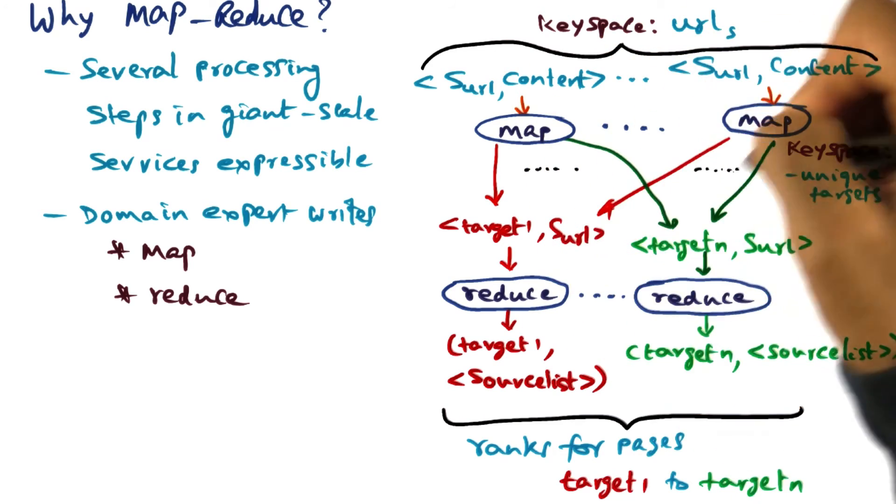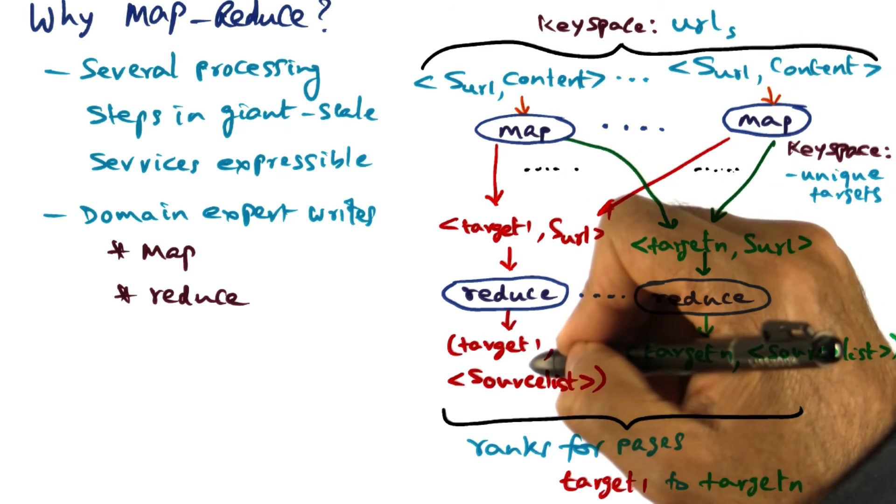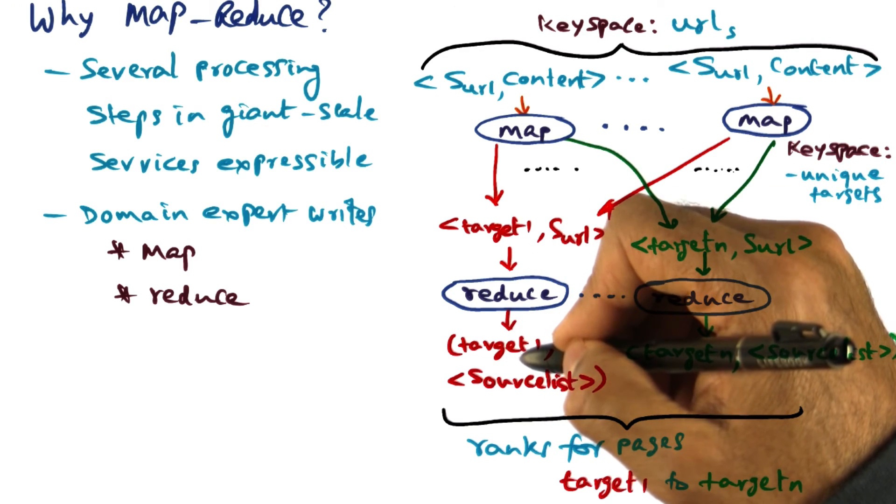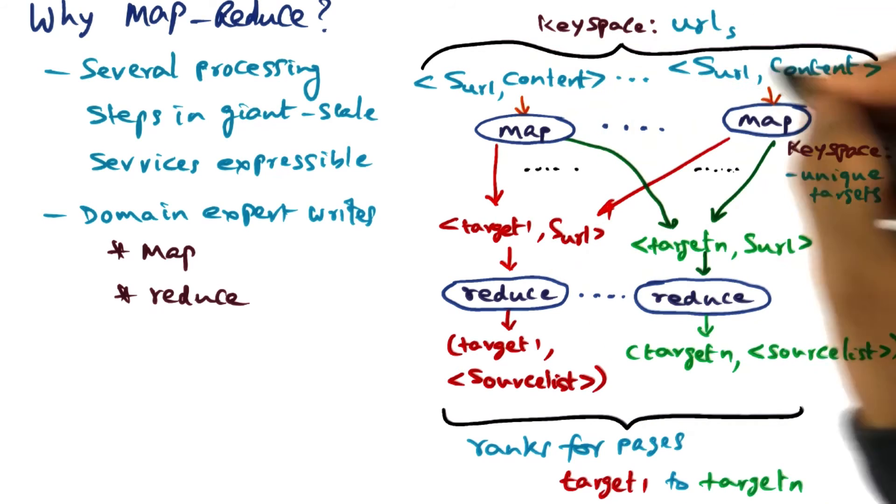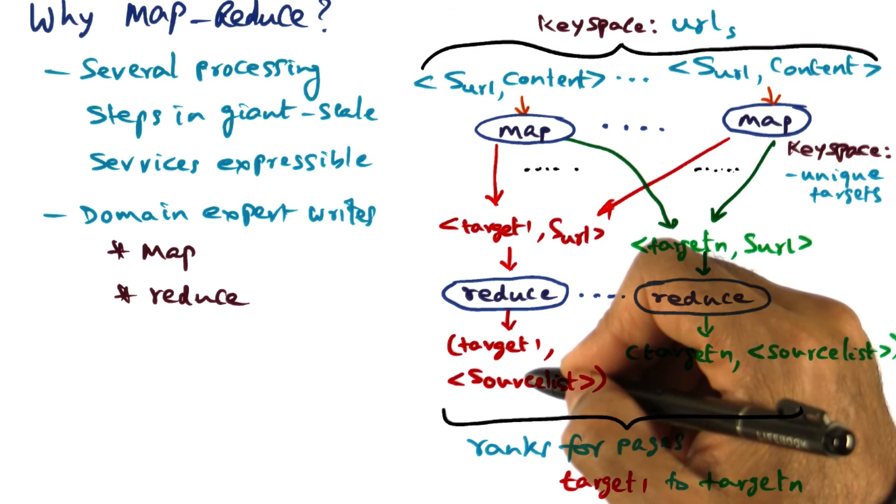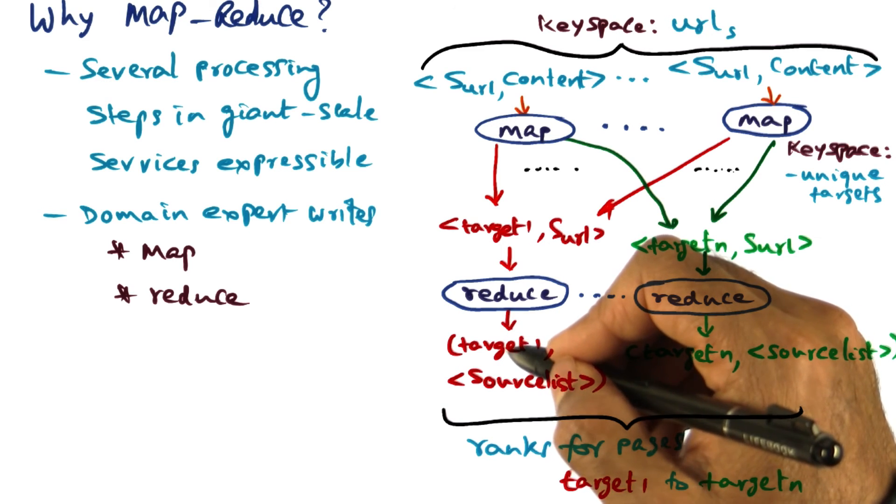And if they find that, they're going to send it to this reducer, and if target one corresponds to my web page, then this reducer is going to say, oh, Kishore's web page was found in this list of source web pages all over the universe. That in a sense gives a rank for that particular web page that we're looking at.